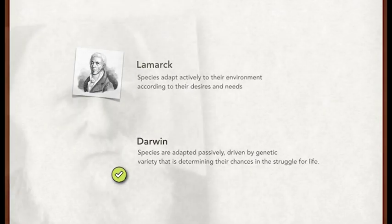Wrapping up, let's compare the two theories one more time. Lamarck's theory states that species adapt actively to their environment according to their desires and needs. Darwin's theory states that species are adapted passively, driven by genetic variety that is determining their chances in the struggle for life.